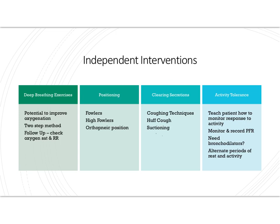Deep breathing exercises help improve oxygenation. Have the patient close their eyes, relax, place one hand on their chest and one on their abdomen, and take a deep breath in through the nose. On exhalation, they should feel the hand on their belly push out — meaning the abdomen rises more than the chest. Encourage them to breathe out through pursed lips as if whistling. This is called abdominal, belly, or diaphragmatic breathing.